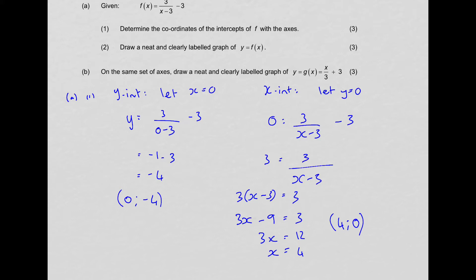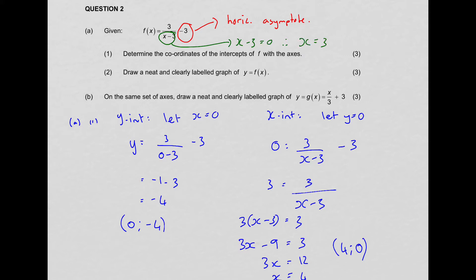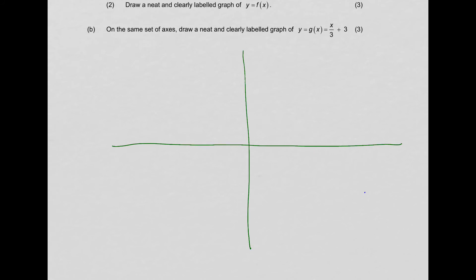Question 2 is to draw a neat and clearly labeled graph of Y equals f(x). Before we do that, let's look at the structure. Remember that the constant of the hyperbola equals your horizontal asymptote — so Y equals negative 3 is the horizontal asymptote. The denominator X minus 3 gives us the vertical asymptote: set X minus 3 equals 0, so X equals 3 is your vertical asymptote.